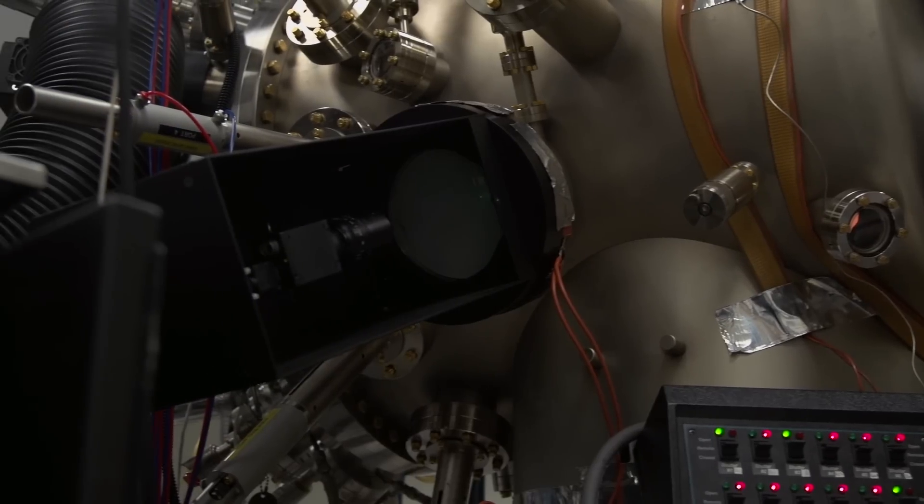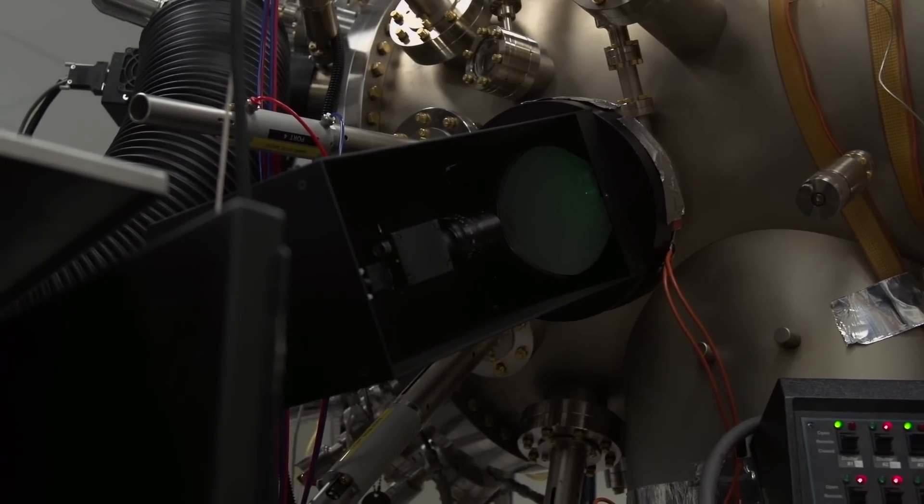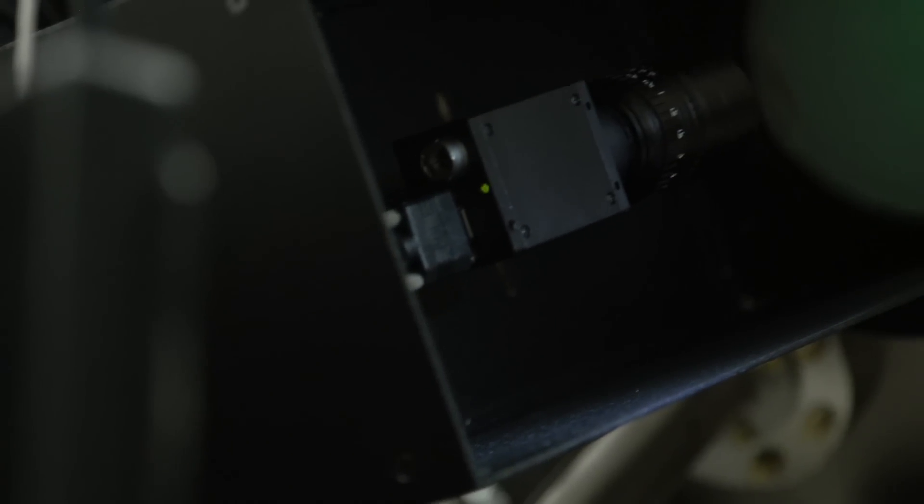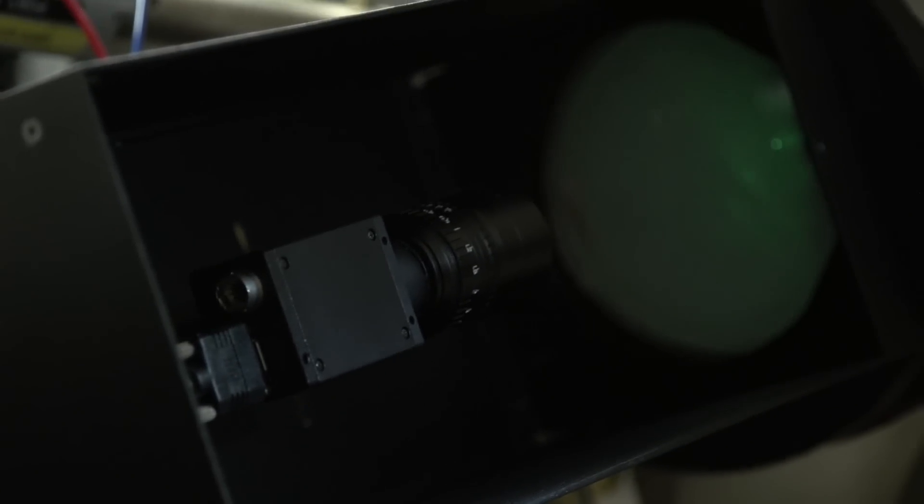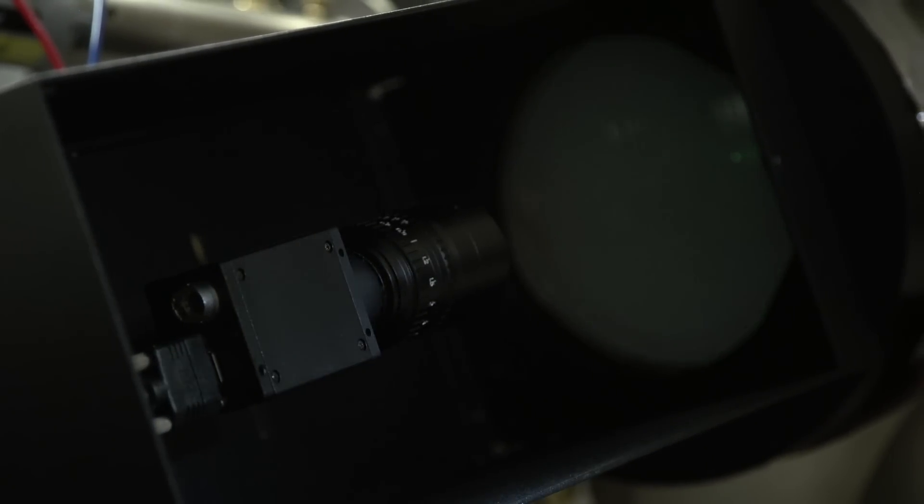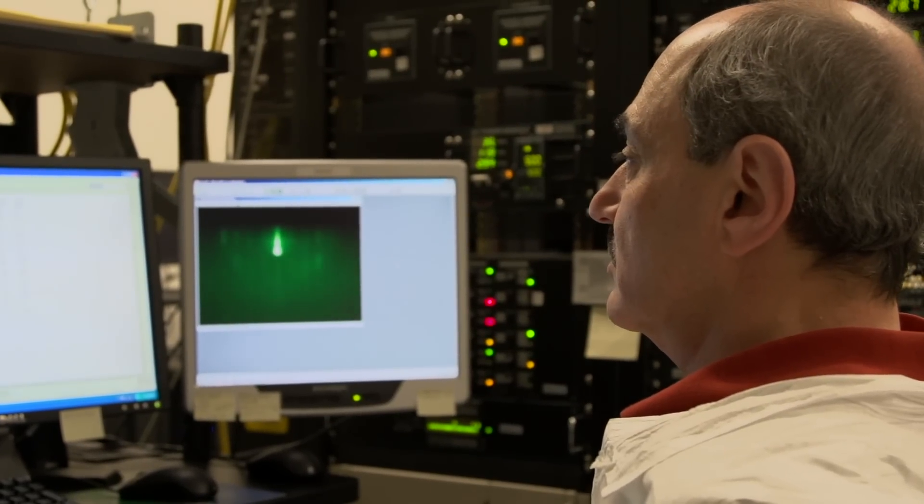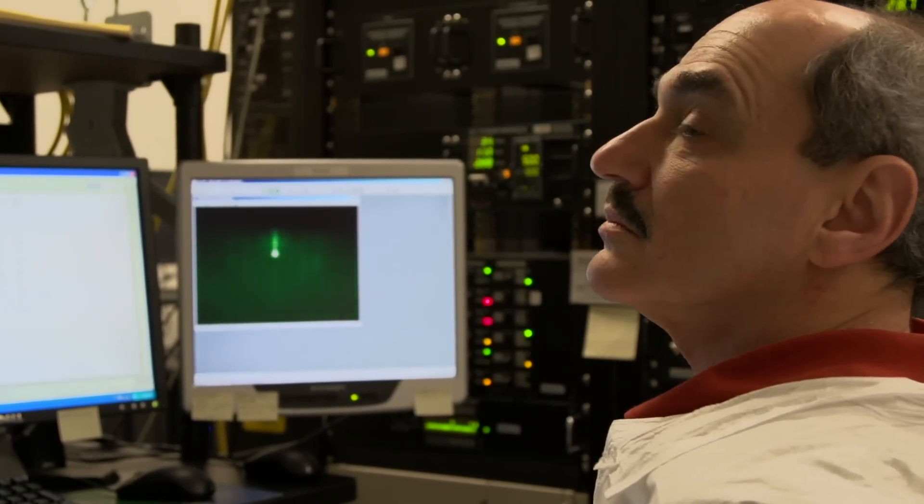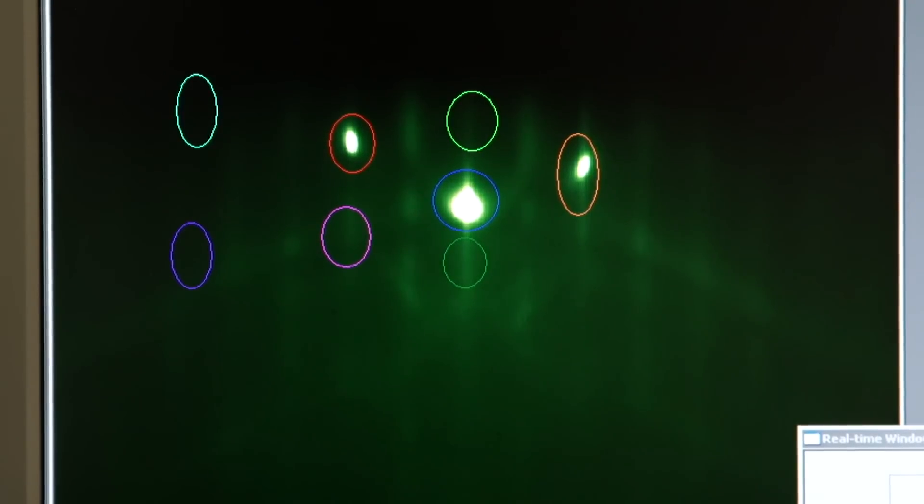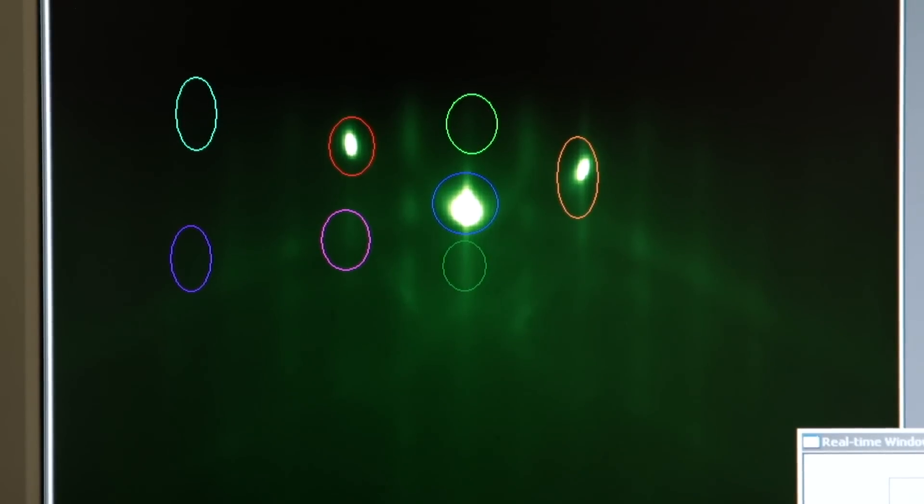I have to be able to nail the thickness and the composition dead on. And that's where something like the KSA 400 really helps me out in terms of establishing growth rates and compositions very accurately. Inside of a minute, boom, I've got not only a single point worth of data, I've got multiple points of data, and I can average them out to get really, really accurate deposition rates.